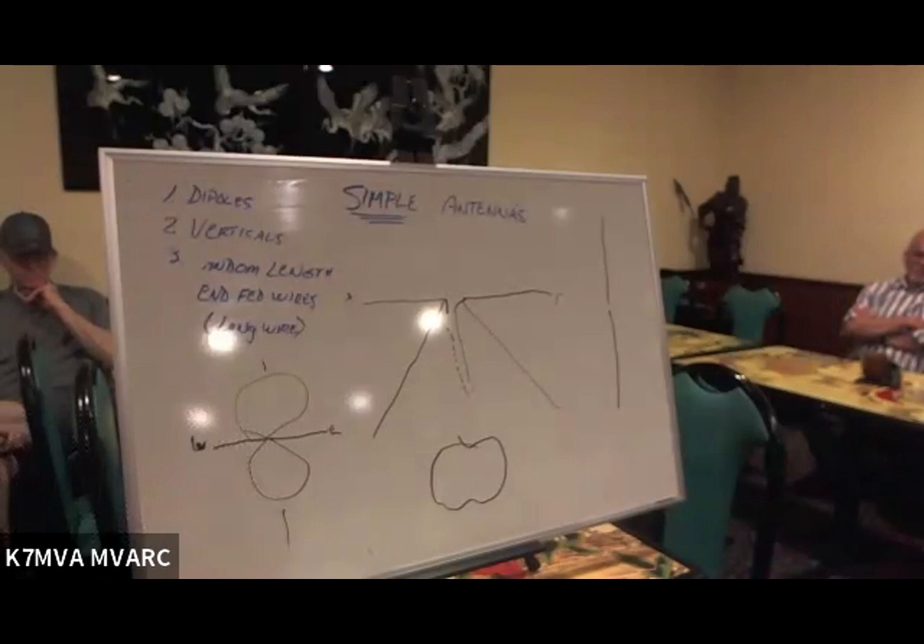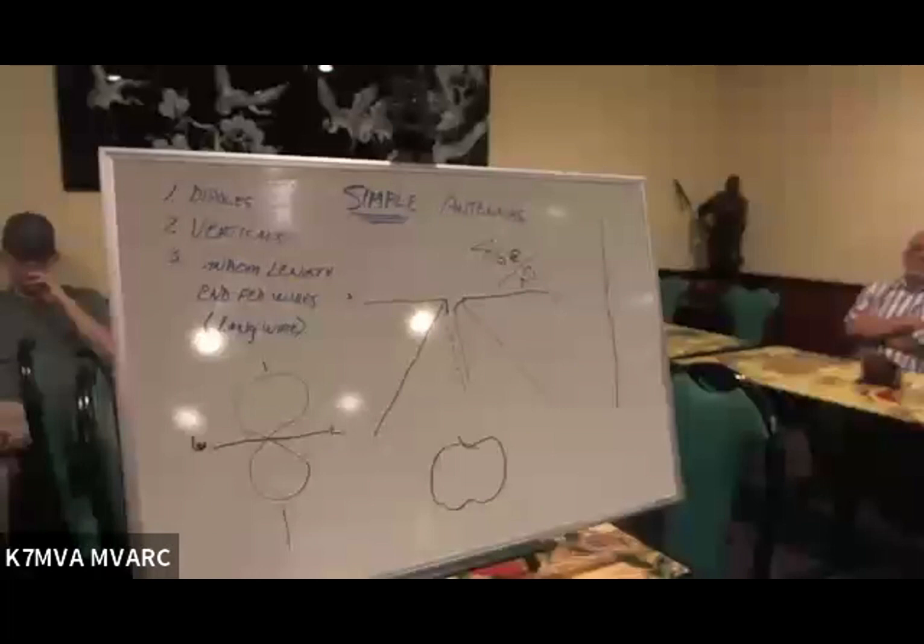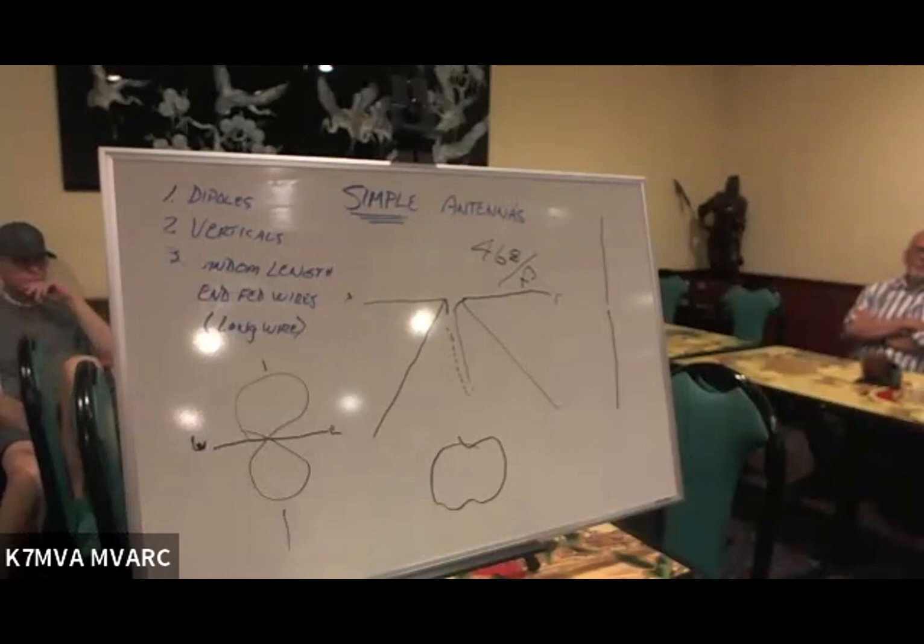So we need to start somewhere though, don't we? We need to know how long, how much wire we're going to have to cut. What we're going to do is we're going to use the basic formula, which is 468 over F for a half wave. Anybody got a calculator? I want to make this antenna for, I'm going to put it right in the middle of the phone band for 7190.